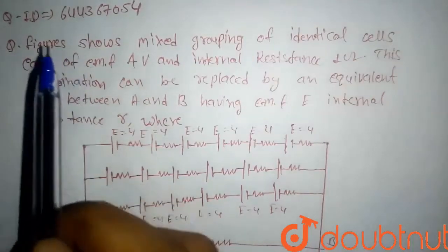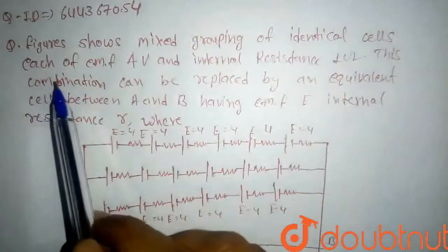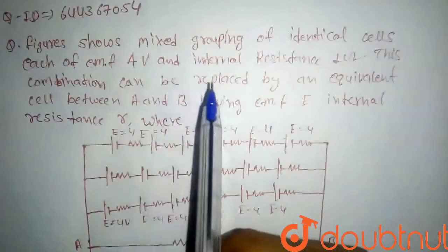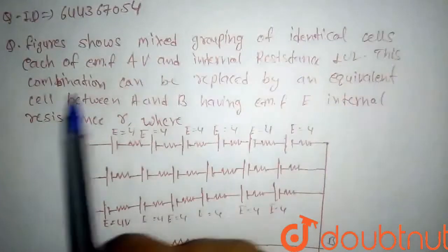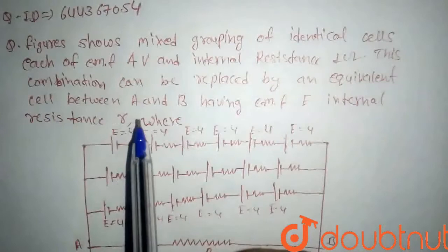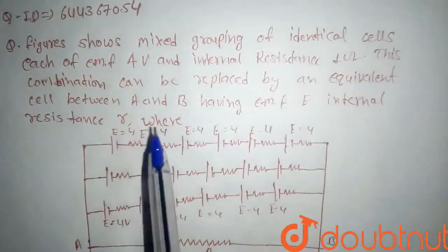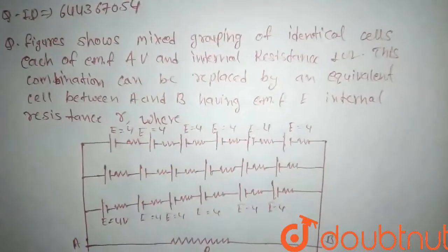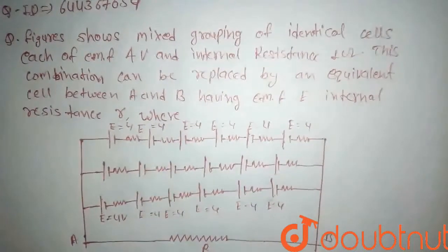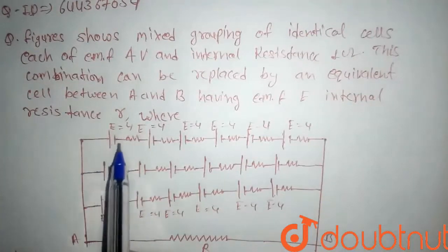A figure source makes the grouping of identical cells, each of EMF 4 volt and internal resistance 1 ohm. This combination can be replaced by an equivalent cell between A and B having EMF and internal resistance R. We have to find the equivalent EMF and equivalent internal resistance.